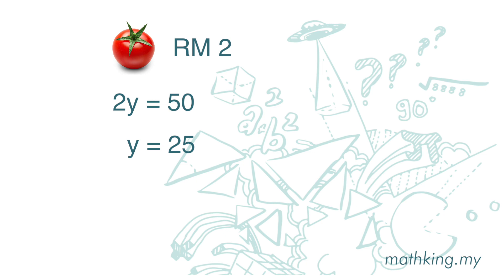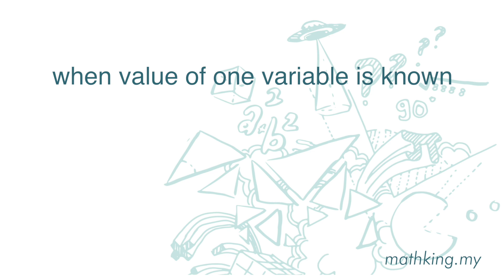On the other hand, in linear equations in two variables, we can have many pairs or sets of answers. However, when one variable takes on one value, then we can ascertain or determine the value of another variable.